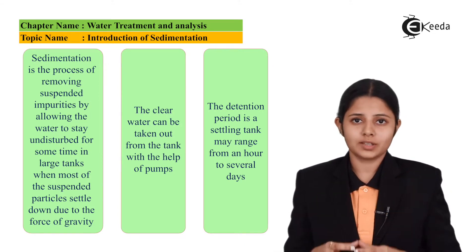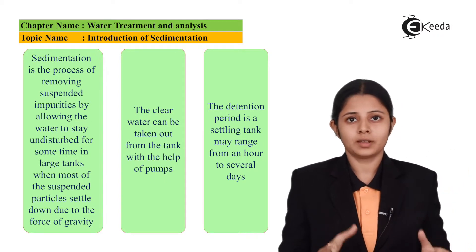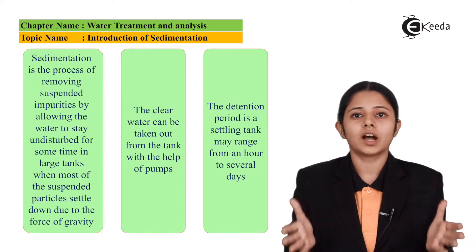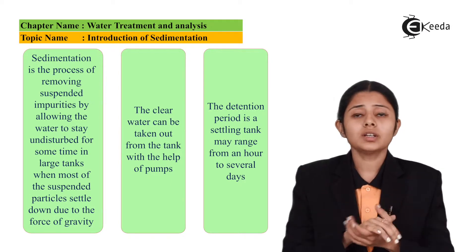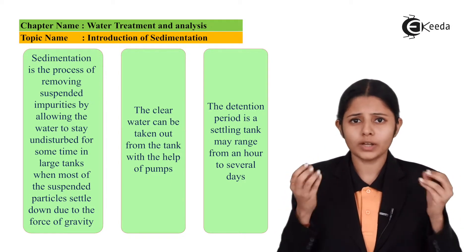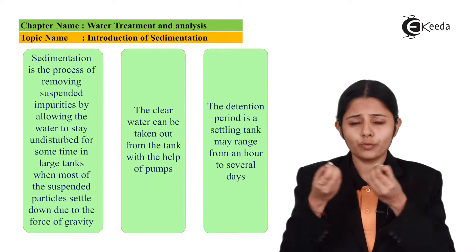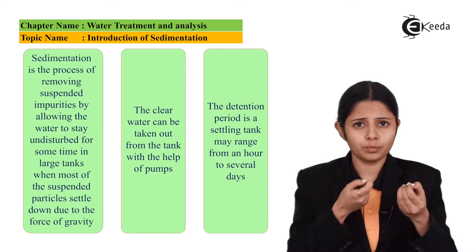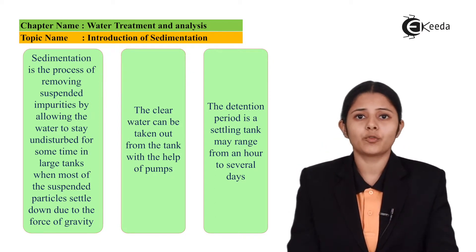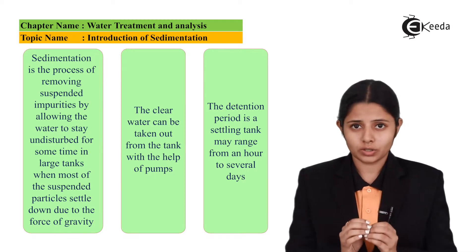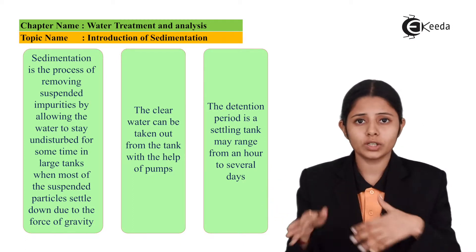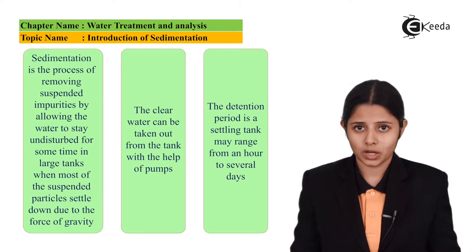Sedimentation is a process of removing the impurities by letting the water stay undisturbed in large tanks. The water stays undisturbed for several days in large tanks. All the floating impurities or small impurities will come down gradually with the help of gravity. All those impurities which are heavier than water but still floating in water will settle down and come down.